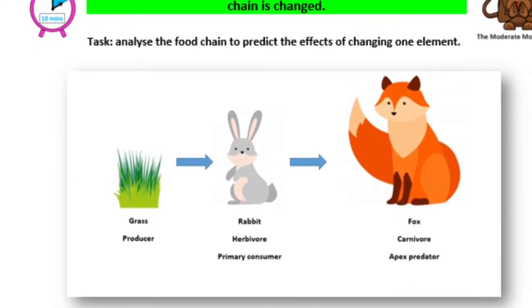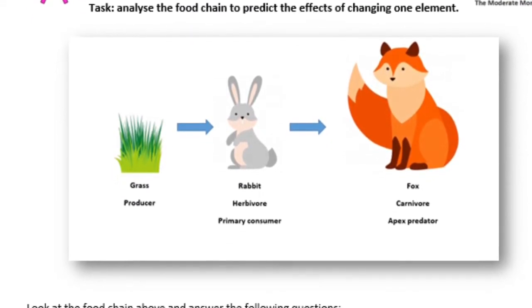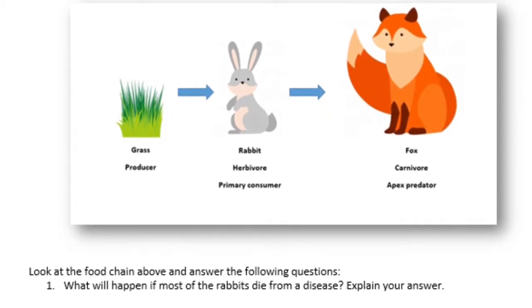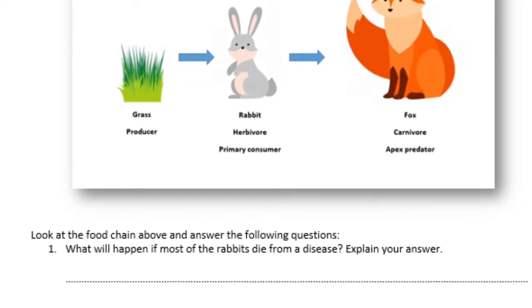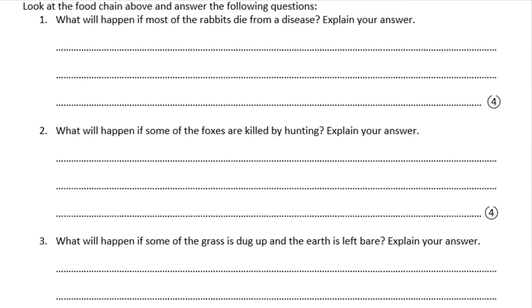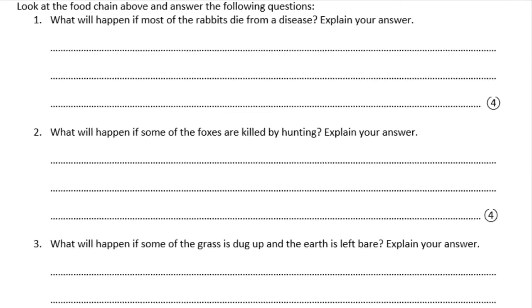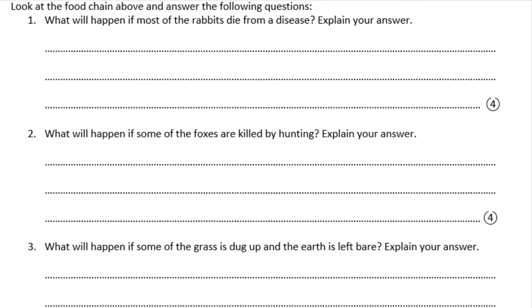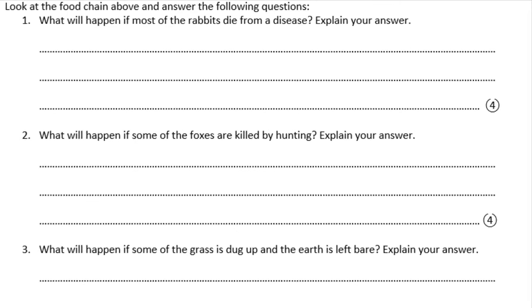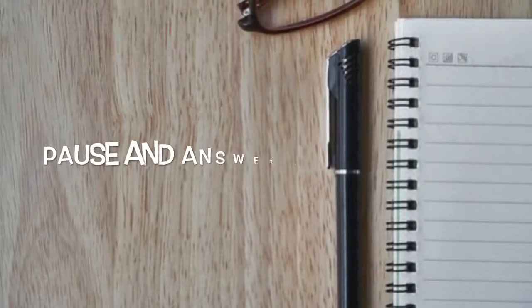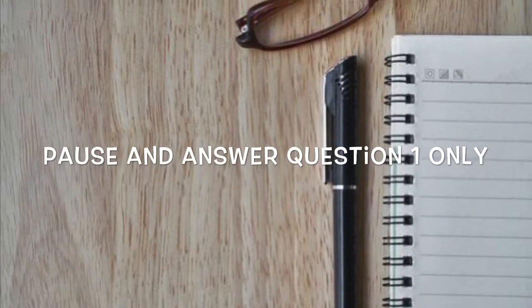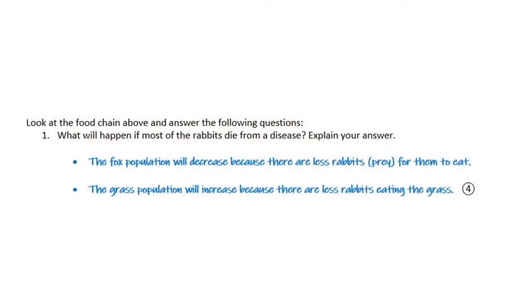On to SC3, where we're going to look at how to predict the effect of changing one element of a food chain. Read through and answer question number one. I would highly recommend using bullet points. Let's go through the answer to question one all together: what will happen if most of the rabbits die from a disease? Explain your answer.